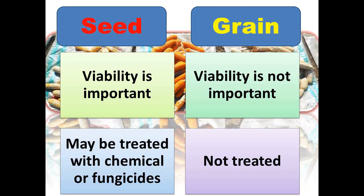Another important difference is of viability. Viability is important for seed because we have to grow it for the next generation — we have to sow it. Whereas viability is not important for grain because we do not use it for reproduction purposes; we can use it for food only.